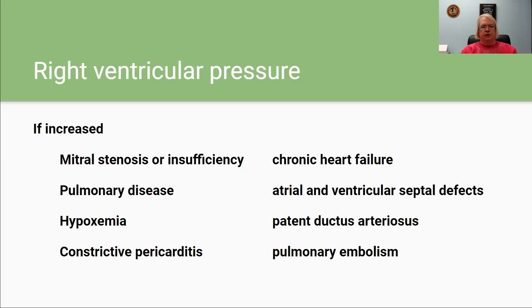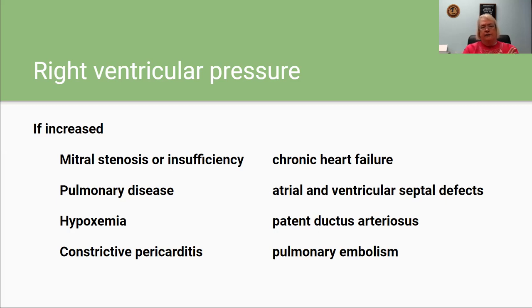Right ventricular pressure — if this is increased, conditions that could cause it include mitral stenosis or insufficiency, pulmonary disease, hypoxemia, constrictive pericarditis, chronic heart failure, atrial and ventricular septal defects, patent ductus arteriosus, and pulmonary emboli. Some of these are pediatric conditions that can cause elevated right ventricular pressure.